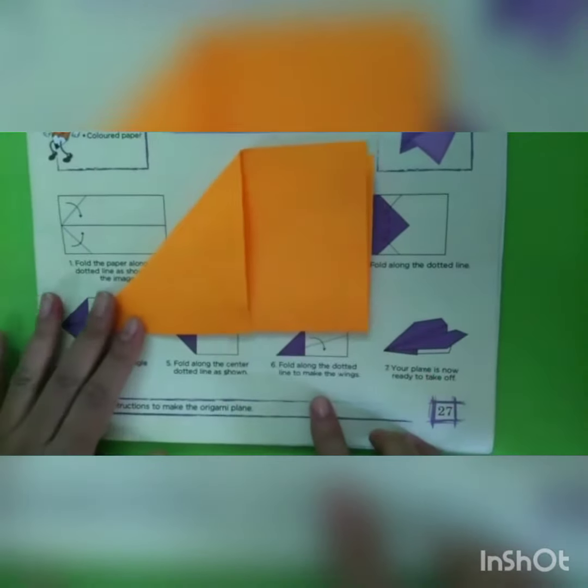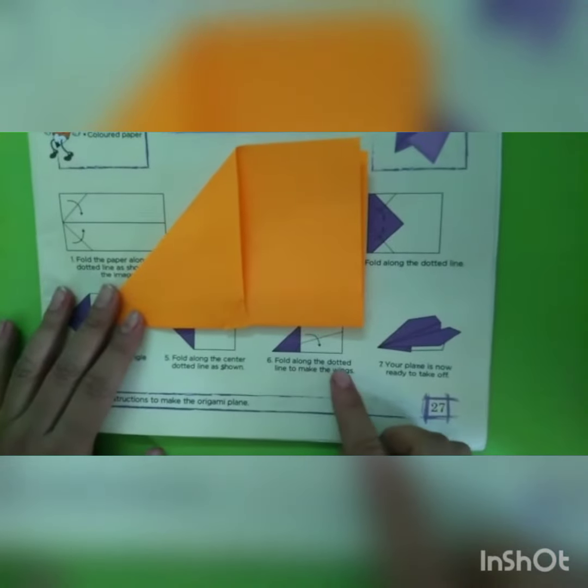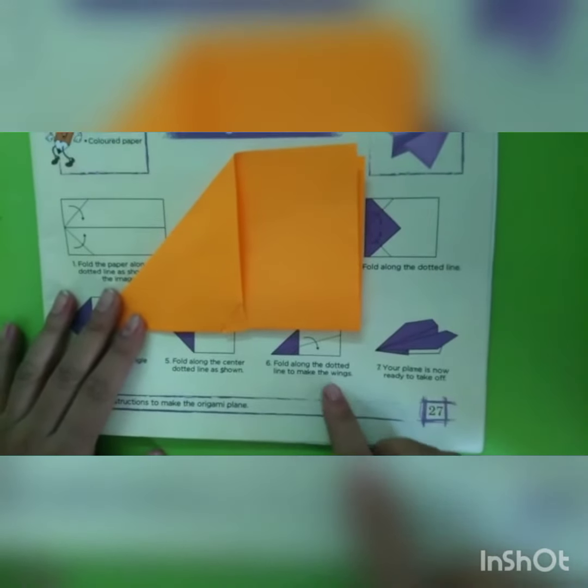Students, in step 6, fold along the dotted line to make the wings, like this.